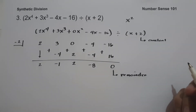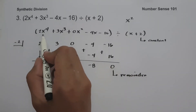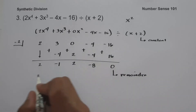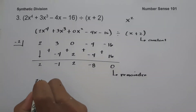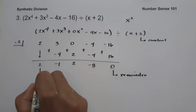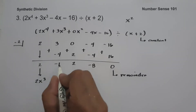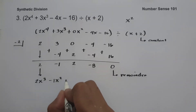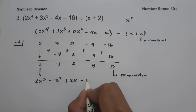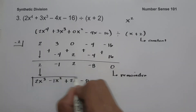To write our answer, we have 2x to the 4th divided by x, which is 2x cubed with coefficient 2. Then negative 1x squared plus 2x minus 8. And this will be our answer.